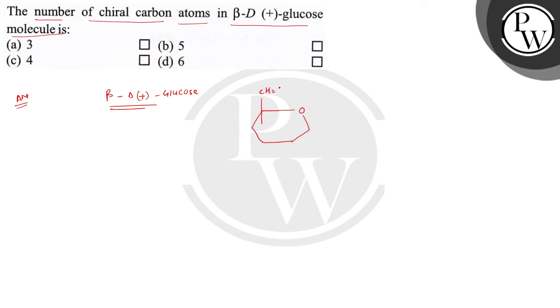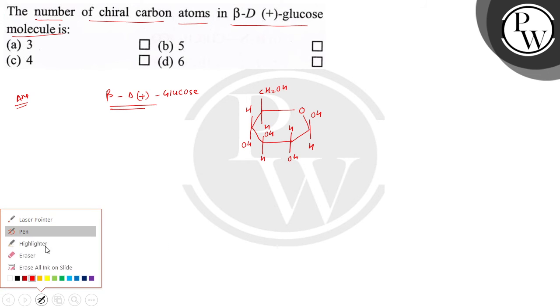Here it is CH2OH H. It is H, OH, this is OH, H, H, OH and here it is OH and H. So if you see the chiral carbon in beta D glucose,